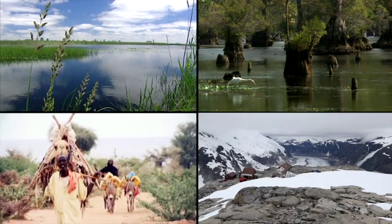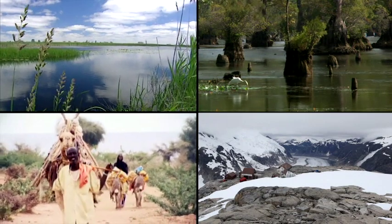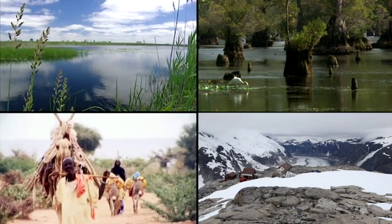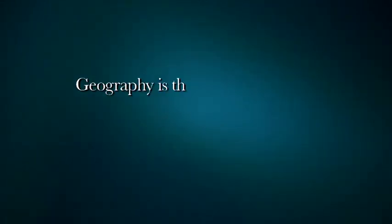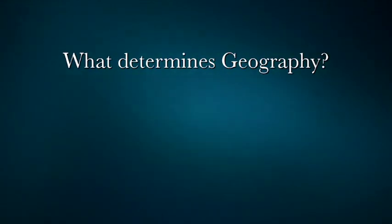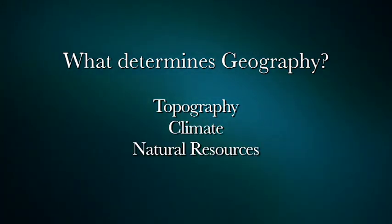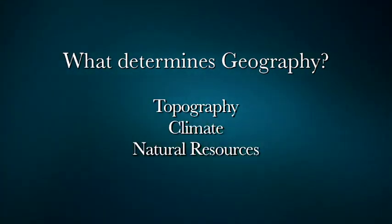Geography is the scientific study of the Earth's surface. There are three important factors that determine geography, including topography, climate and natural resources. These elements influence how people adapt to their surroundings.